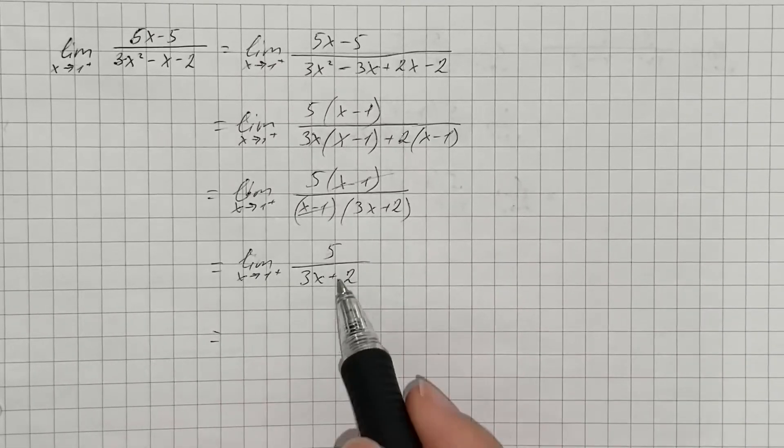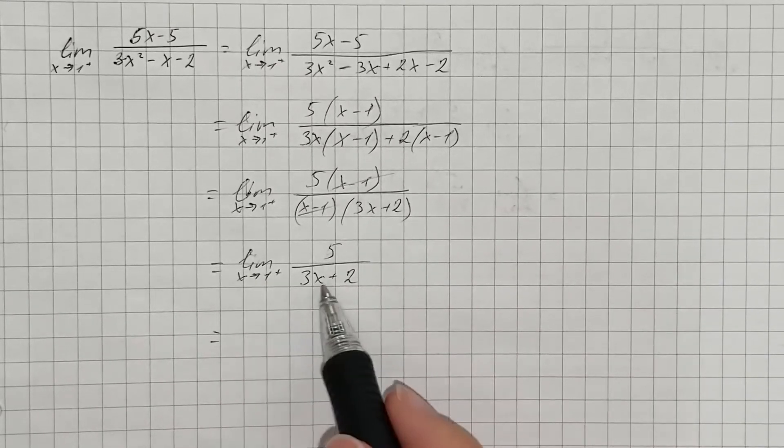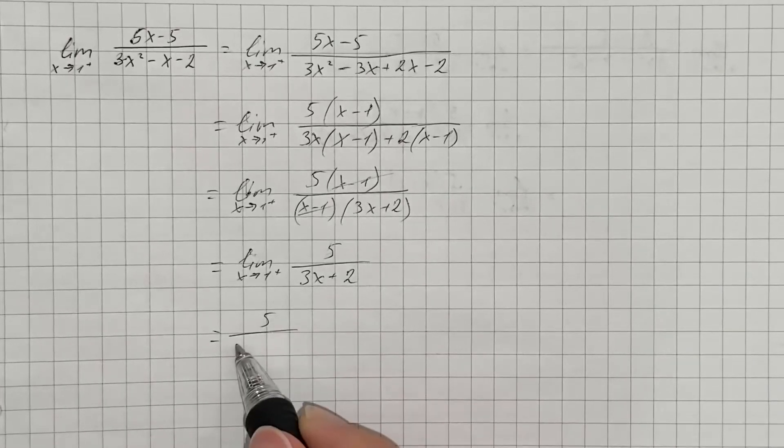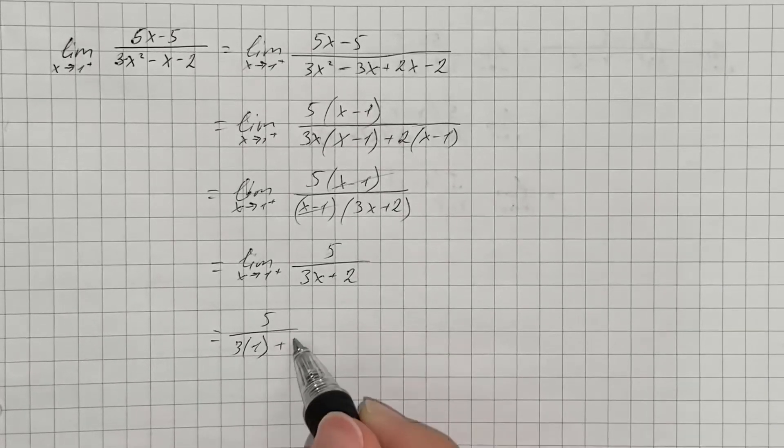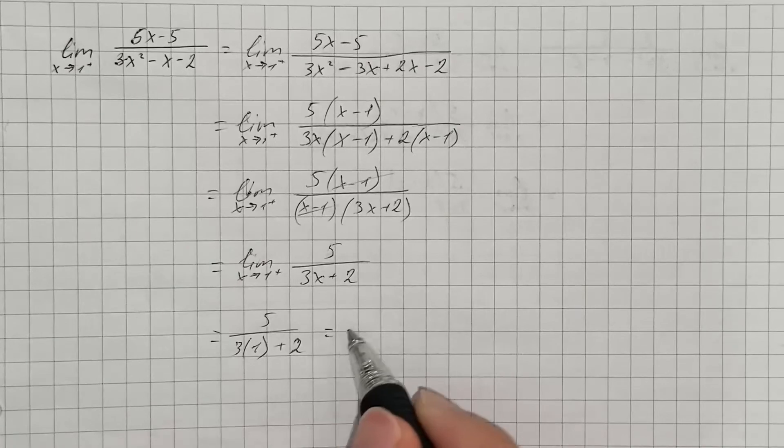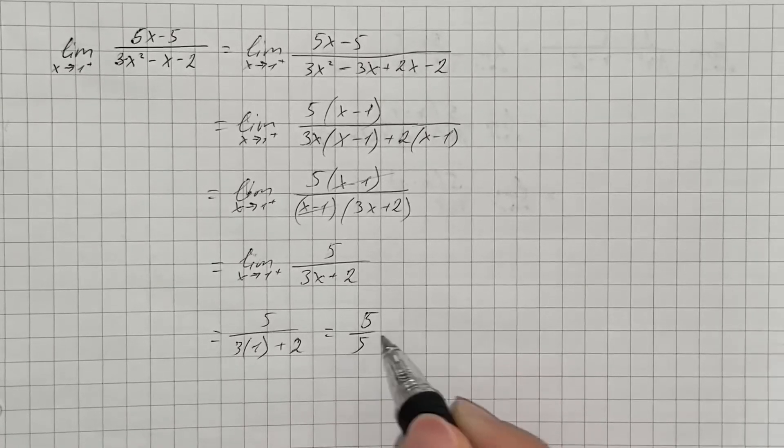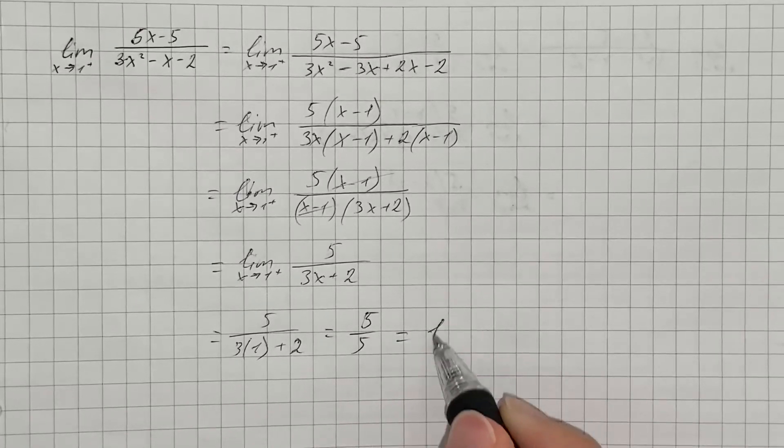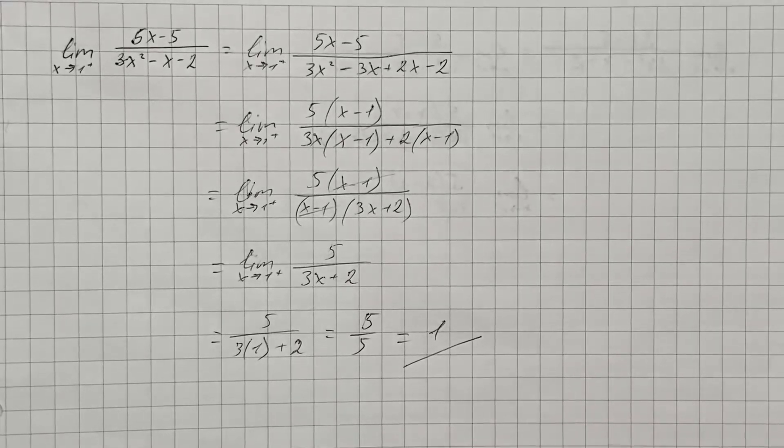So now we can plug the value of x equals 1 to get 5 over 3 times 1 plus 2. And that's going to be 5 over 5, which equals 1. So that's the value of the given limit.